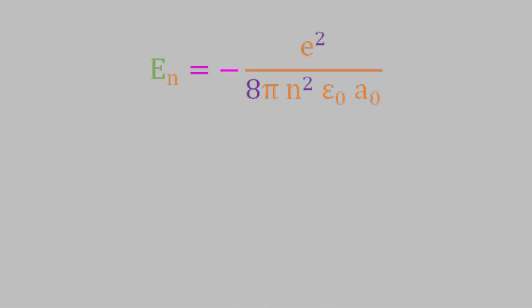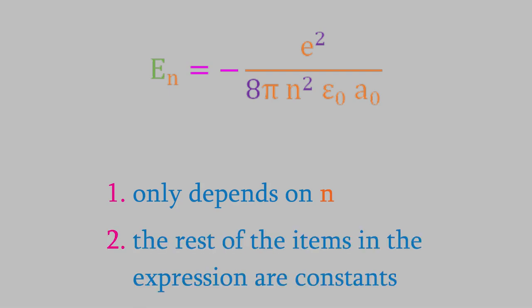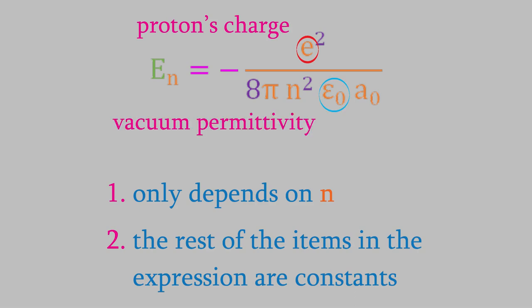There are two important things to notice about this equation. First, although the radial wave function depends on the integers n and l, the energy depends only on n. The second thing to notice is that, except for n, everything on the right side of this equation is a constant. e here is the charge on the proton, epsilon-naught is the vacuum permittivity, and a zero is called the Bohr radius. You might recall from way back in video number one of this course that the Bohr radius is equal to 52.92 picometers.